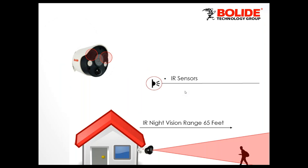The IR sensors have a night vision range of 65 feet, so you don't have to be directly at the camera — it goes all the way to 65 feet. It's not a smart IR, but it does have adjustments on the light output, so if it's too close or too far away you can increase the output. The maximum SD card size is 128GB.